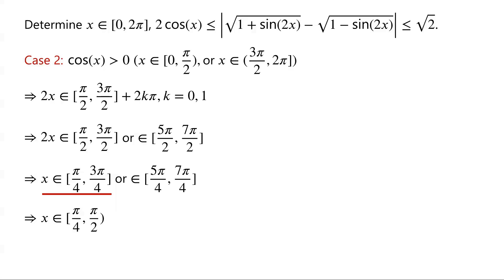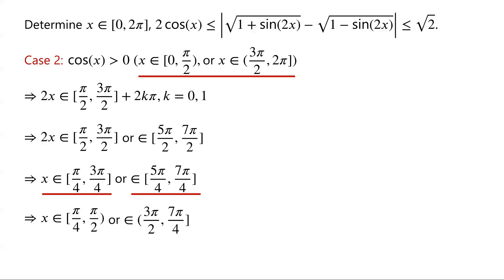Similarly, cos(2x) ≤ 0 holds when x ∈ [5π/4, 7π/4]. The condition cos(x) > 0 means x ∈ [0, π/2) or x ∈ (3π/2, 2π]. The interval [5π/4, 7π/4] and [0, π/2) have no intersection. The intersection of [5π/4, 7π/4] with (3π/2, 2π] is (3π/2, 7π/4].